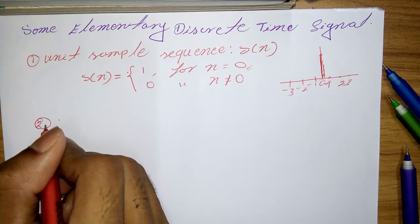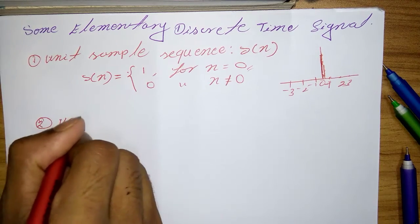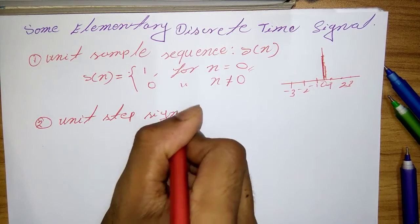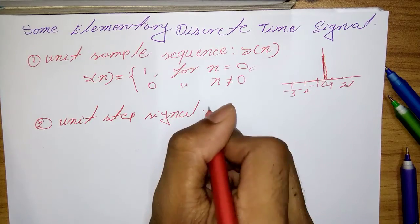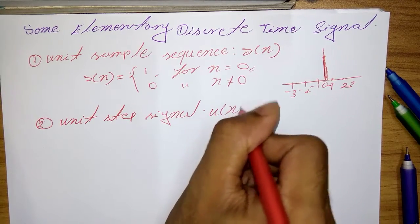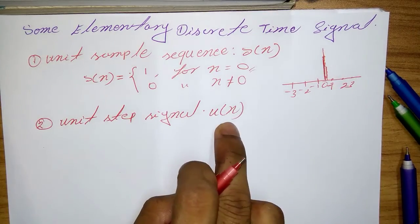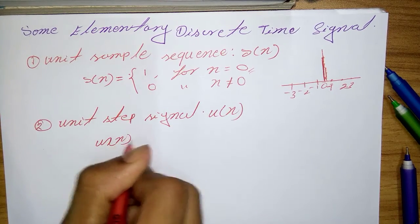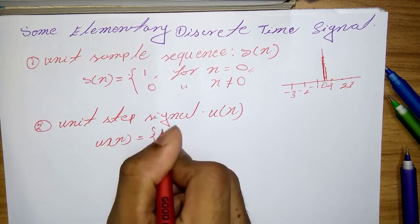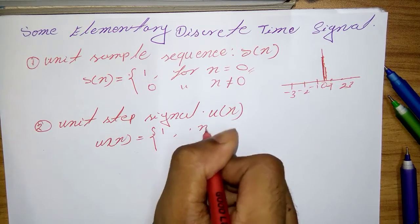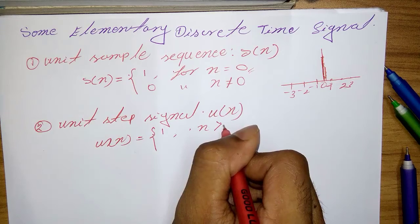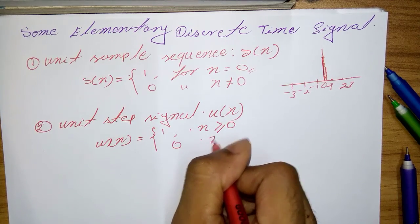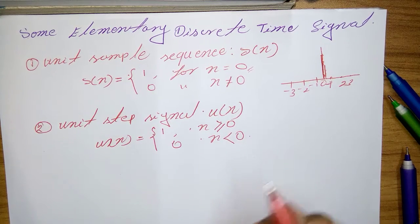So next one is the unit step signal, which is denoted by u of n. So first I write the equation: u of n equal 1 for n is greater than or equal 0, and 0 for n is less than 0.